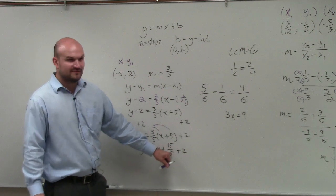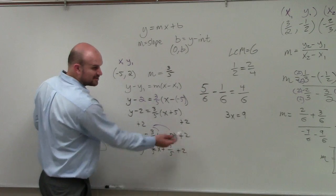Well, what's 15 divided by 5? 3. So therefore, 3 plus 2 is 5, and then it's now in slope-intercept form.